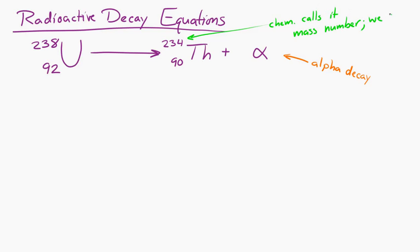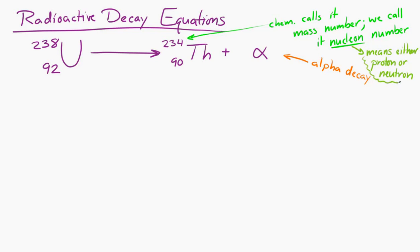In physics, we also call it the nucleon number. A nucleon is a new term meaning either a proton or a neutron — any particle contained in the nucleus. So uranium has 238 nucleons, meaning 238 total protons and neutrons. Thorium has a nucleon number of 234, with a total of 234 protons and neutrons. And the alpha particle has a nucleon number of 4, a total of 4 protons and neutrons together.